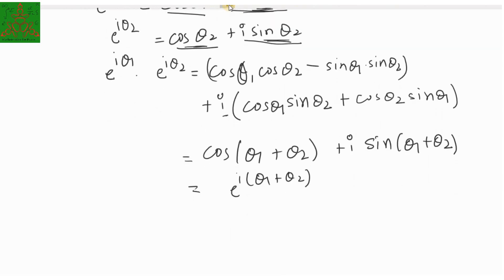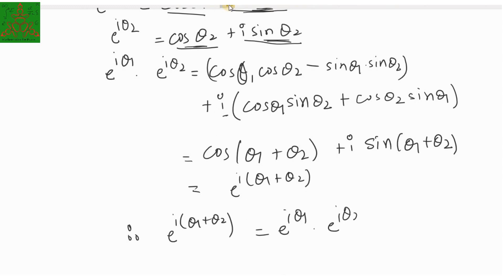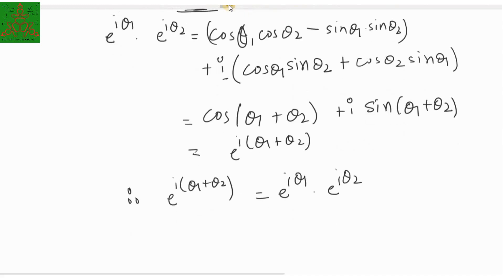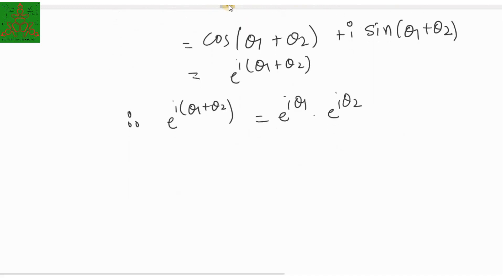So e raised to i(θ₁ + θ₂) equals e raised to iθ₁ into e raised to iθ₂. It is exactly the same formula that we derived in our previous video. Let us now have some remarks.